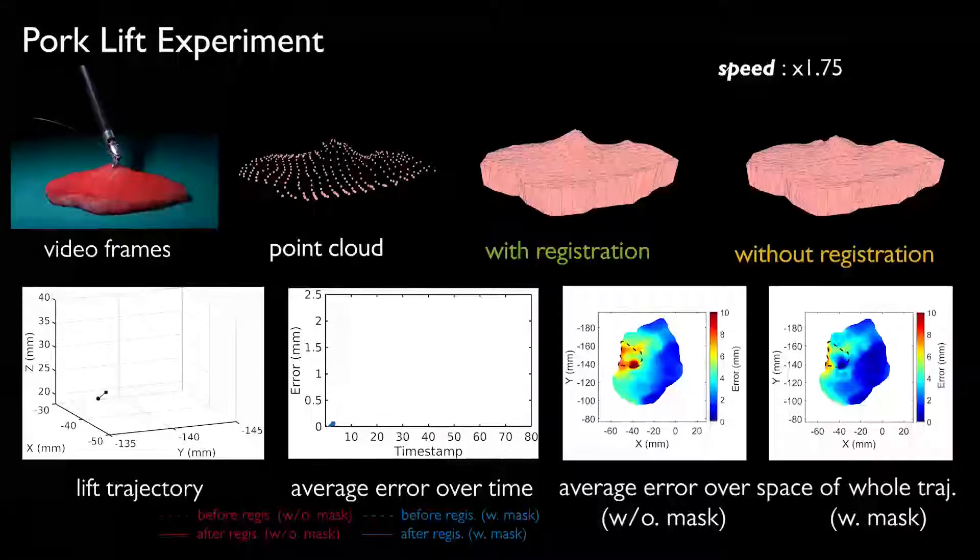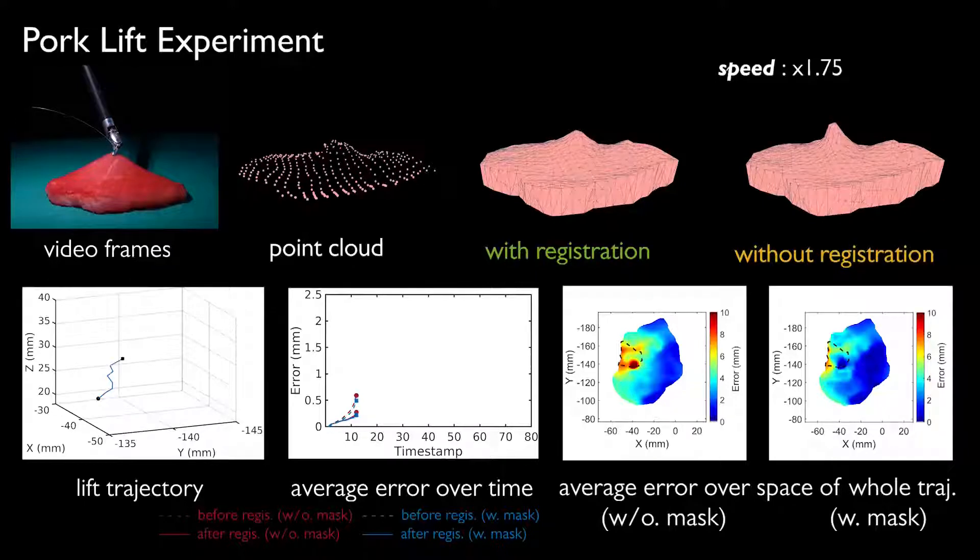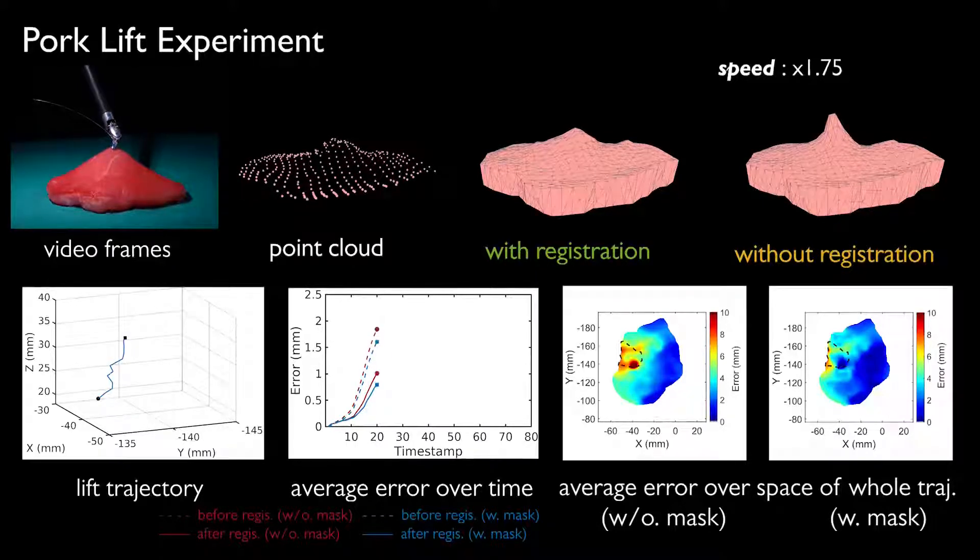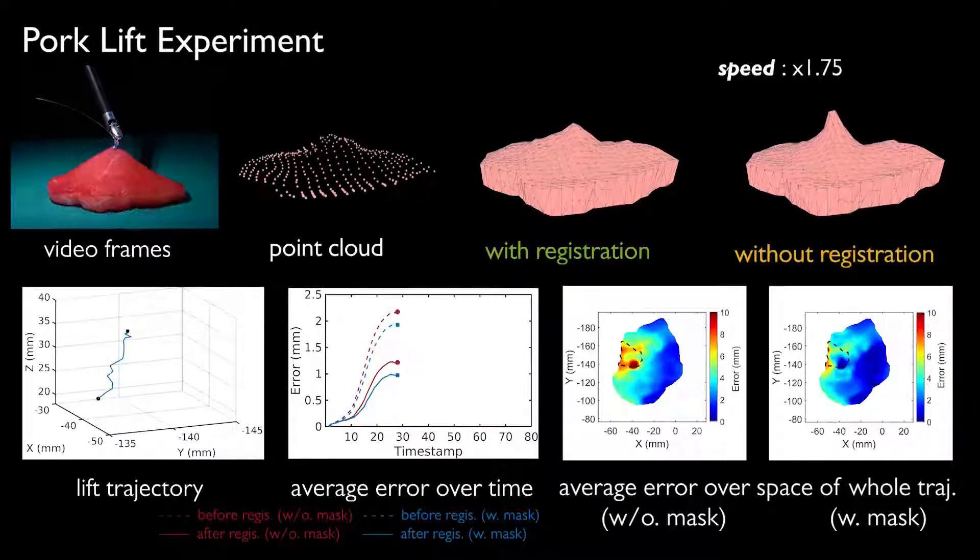We also show the experiment by applying different and more complex control trajectories using the da Vinci research kit. The first experiment is the lifting of pork tissue. Both averaged error over time and space are computed.